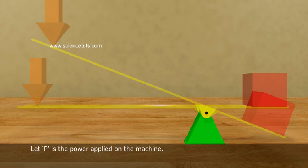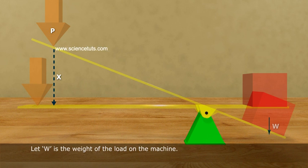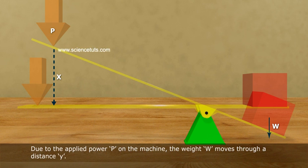Let P is the power applied on the machine. Let the power P applied through a distance X on the machine. Let W is the weight of the load on the machine. Due to the applied power P on the machine, the weight W moves through a distance Y.